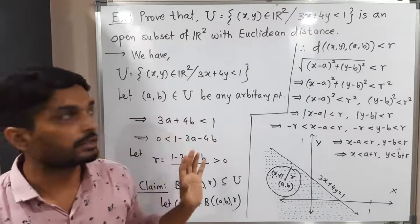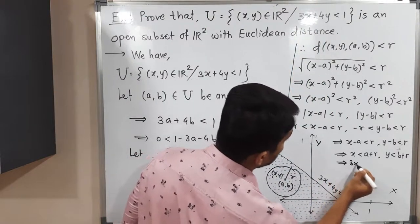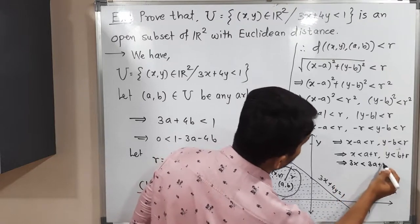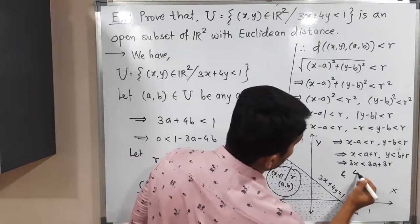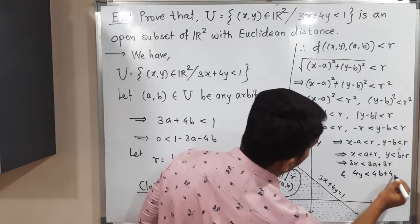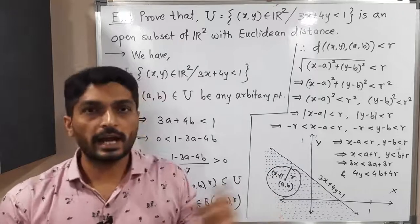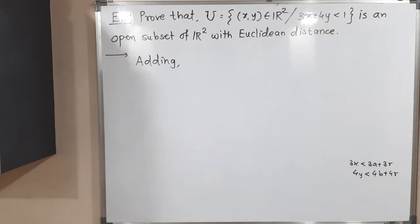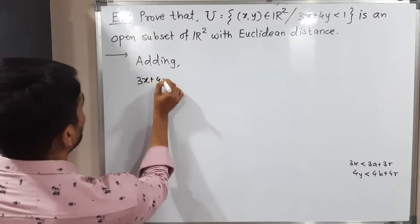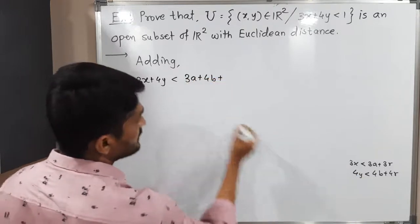My target is to reach the inequality 3x + 4y < 1. For that I multiply the first inequality by 3: 3x < 3a + 3r, and multiply the second by 4: 4y < 4b + 4r. Then I add these two inequalities together to get: 3x + 4y < 3a + 4b + 3r + 4r = 3a + 4b + 7r.